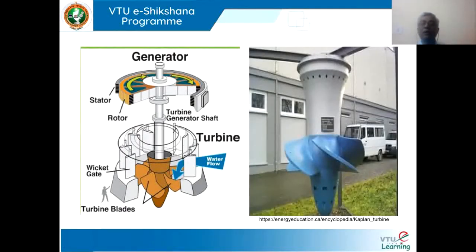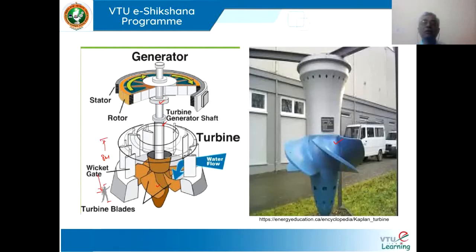This is how the Kaplan turbine blades look. You can see the height — generally it will be about 1.75 meters if compared to the height of a person. Generally, it will be about 7 to 8 meters from the runner towards the draft tube. The shaft of the Kaplan turbine is connected to the generator, and the generator generates electrical energy by means of a rotor and stator arrangement, as we have discussed in previous classes.